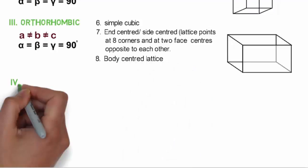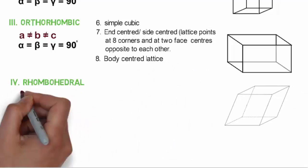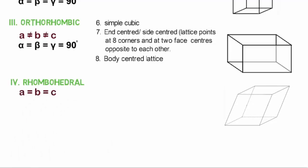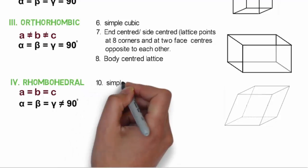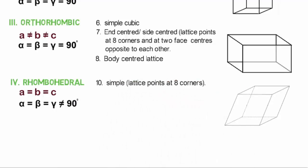The fourth one is rhombohedral, where A, B and C are all equal, and also alpha, beta and gamma are equal but not equal to 90 degrees. It can have only a simple cubic lattice structure.